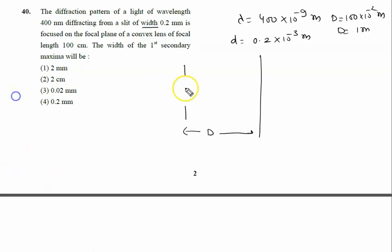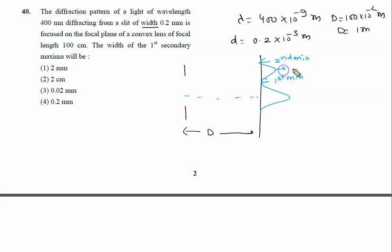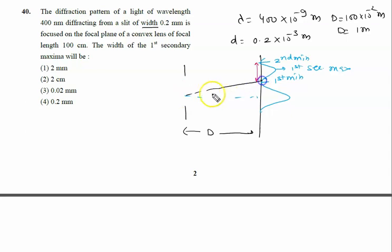First, I will discuss the theory behind this. We have the central maximum in the middle, then the first minimum on either side, then the second minimum beyond that. The region between the first and second minima is known as the first secondary maxima, and we have to calculate its width — that is, this distance. The condition for minima is: path difference d·sinθ = nλ.